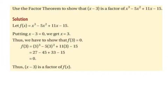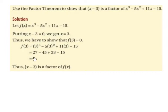So we have to substitute 3 in place of each of our x values. So f of 3 is going to be 3 cubed minus 5 times 3 squared plus 11 times 3 minus 15. 3 cubed is 27, minus 5 by 3 squared is minus 45, 11 by 3 is 33, and minus 15. So 27 minus 45 plus 33 minus 15 is equal to 0.